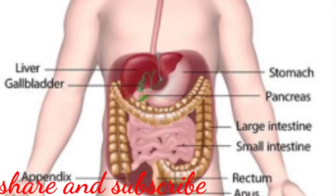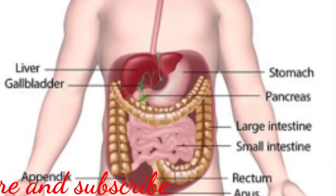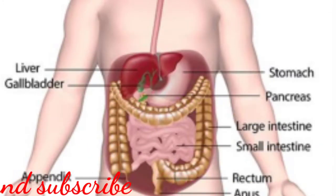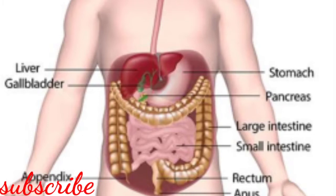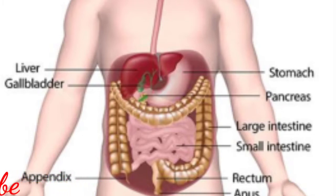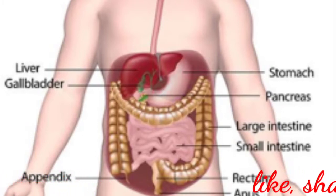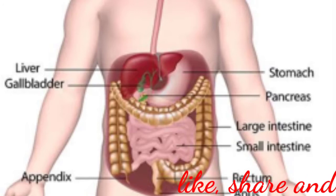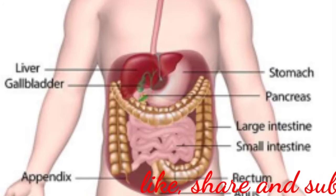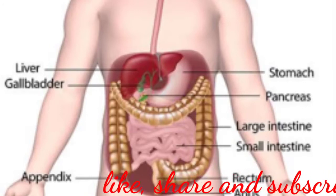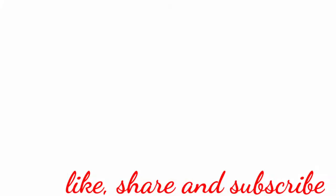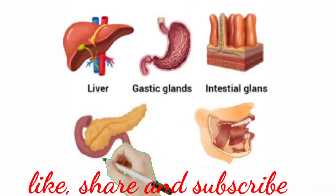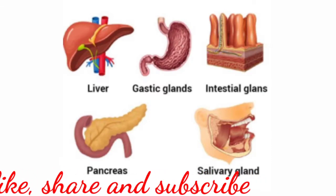The digestive system includes the alimentary canal and associated digestive glands. If you want to learn about the structure of the alimentary canal, please go to the link given in the description box. Now this is about digestive glands.